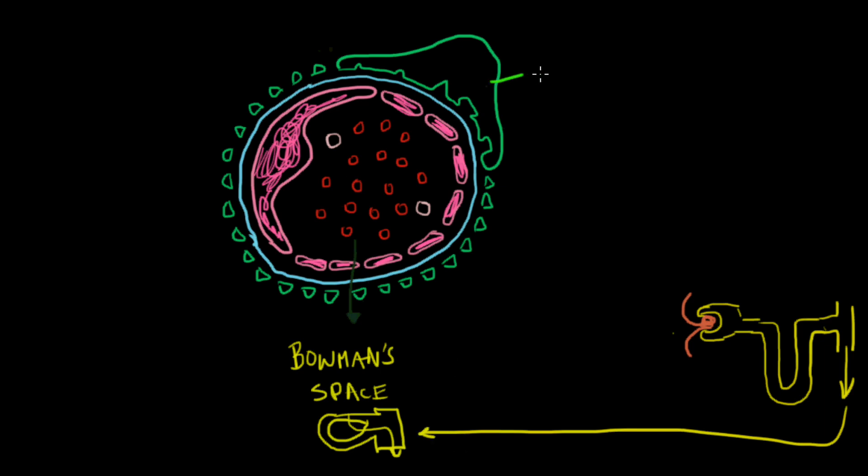Once again, this is an epithelial cell, and this is an endothelial cell. What I'd like to do is divide this picture into two. On this side we're going to talk about nephrotic syndrome, and on this side we'll talk about nephritic syndrome.